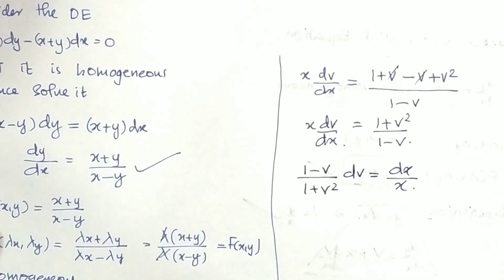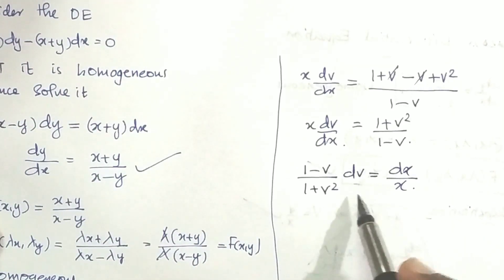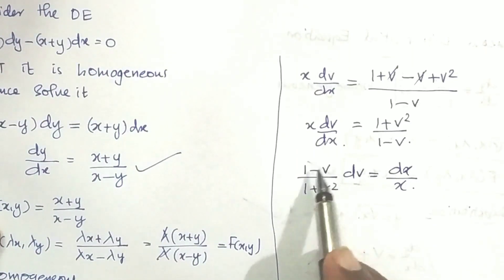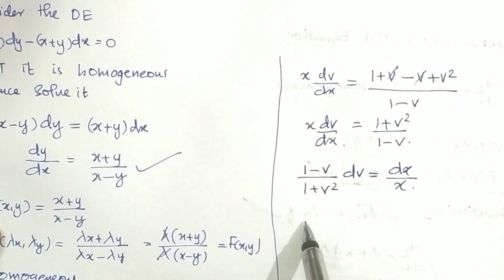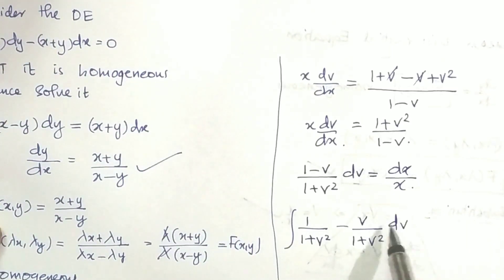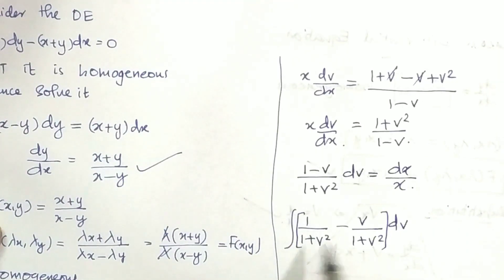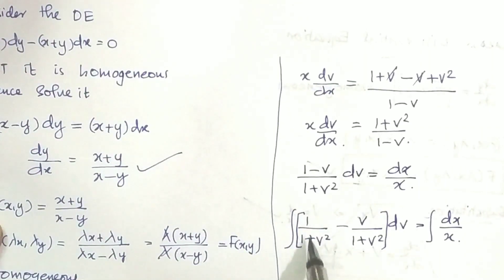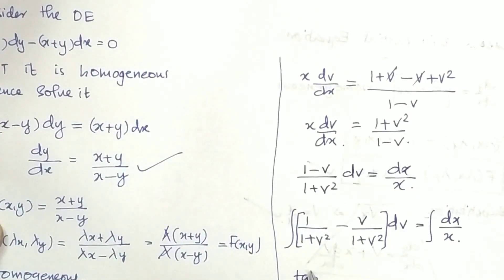Now we integrate both sides. We split the left side: integrate [1/(1 + v²) − v/(1 + v²)] dv = integral of dx/x.